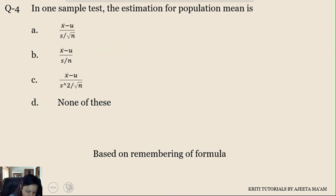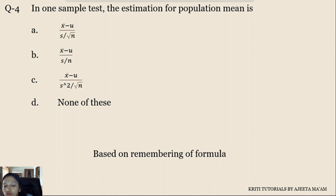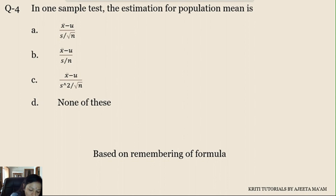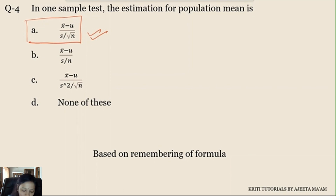The fourth question says: in a one-sample test, the estimation for population mean is — a formula-based question from the inferential statistics unit. Both the third and fourth questions are from inferential statistics, so please go through the formula list and the theory part carefully. The formula is: sample mean minus population mean, upon standard deviation divided by the square root of sample size. Again, it's based on remembering the formula — no solving or evaluation needed.